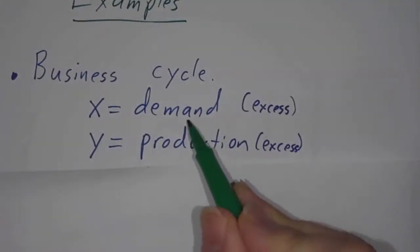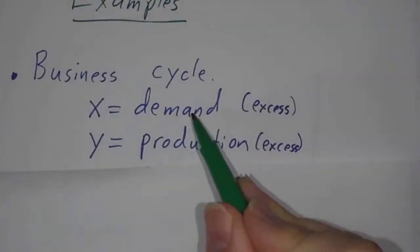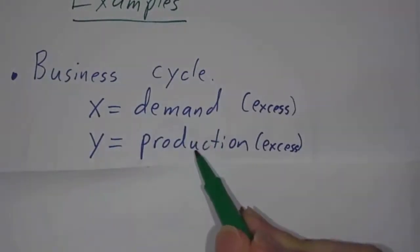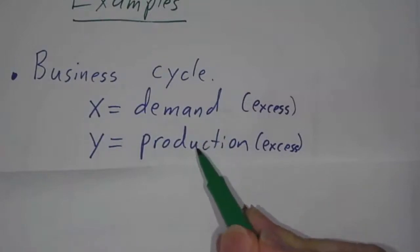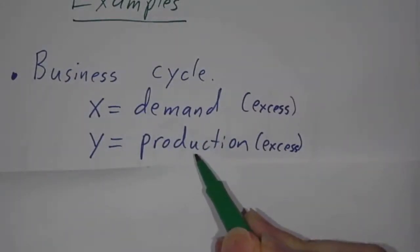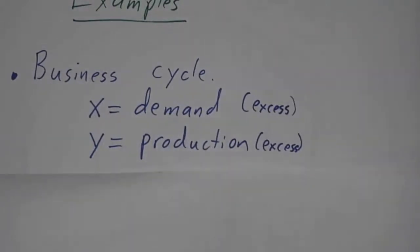So people produce more. Demand is filled. Demand drops. Production drops. Then there's a shortage. Demand goes up. Production goes up. There's a glut. Demand goes down. Production goes down. And you go around and around and around and around.